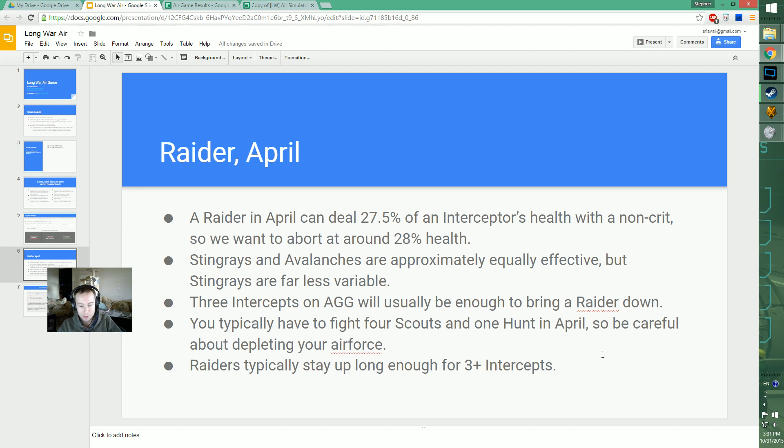Three intercepts on aggressive will usually be enough to bring a Raider down. Raiders typically stay up long enough for three or more intercepts. Keep in mind you typically have to fight four Scout missions (small Scouts or Raiders) and one Hunt (a Fighter) in April, so watch out for depleting your air force.